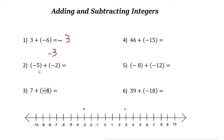Let's look at the next example: negative 5 plus negative 2. On the number line, negative 5 is here. Since we're adding negative 2, we go 2 units to the left. So the answer is negative 7.